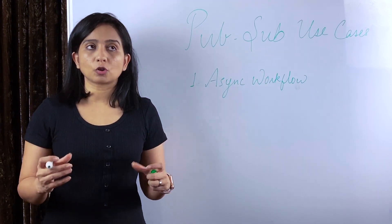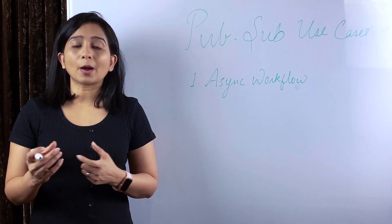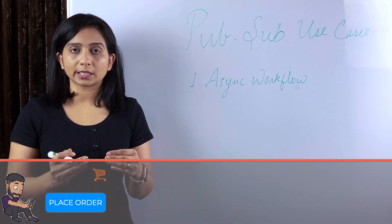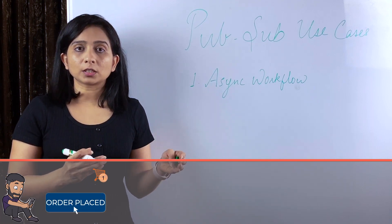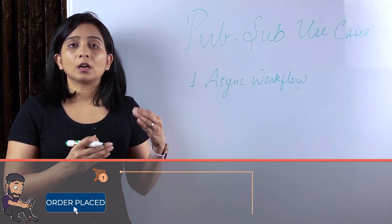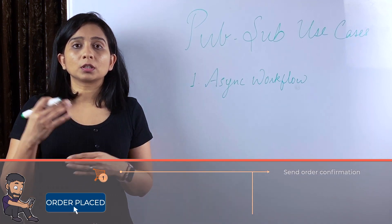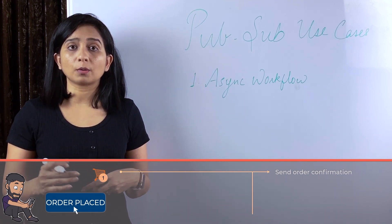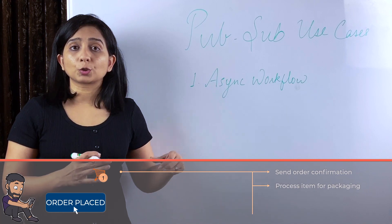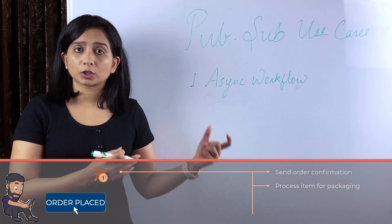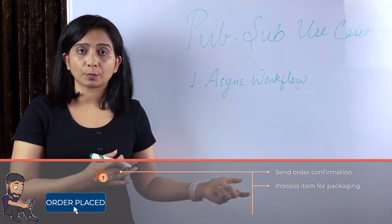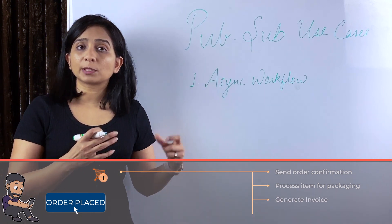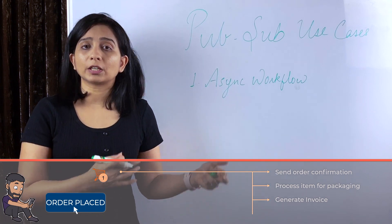Workflow in terms of business or a system defines a business process. For example, in an e-commerce website, as soon as an order is placed, there has to be notifications to the customer via email and SMS, a communication to the warehouse to pack and ship the order, and a communication to the finance department to generate the invoice.